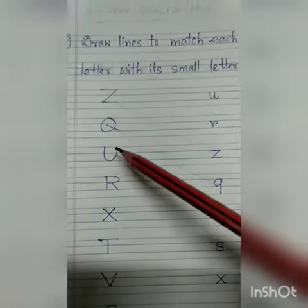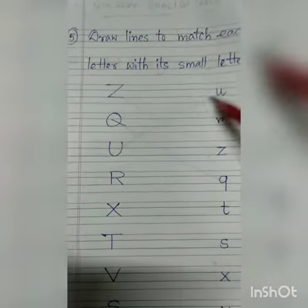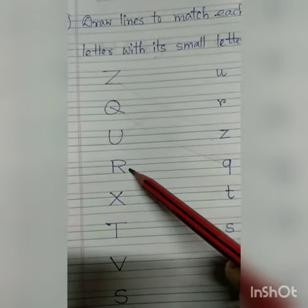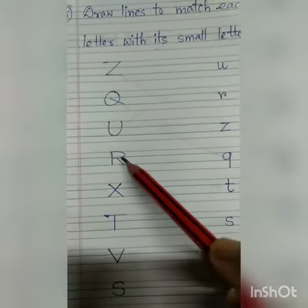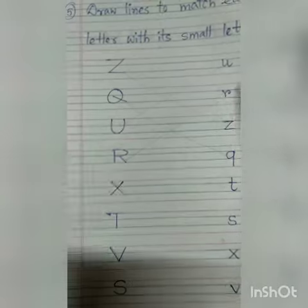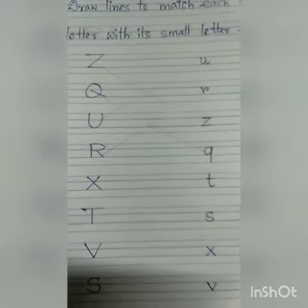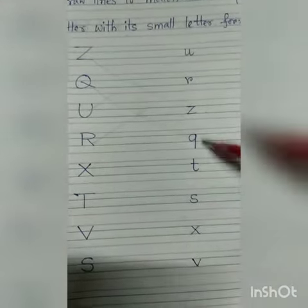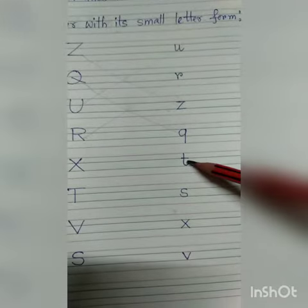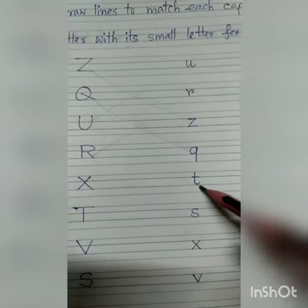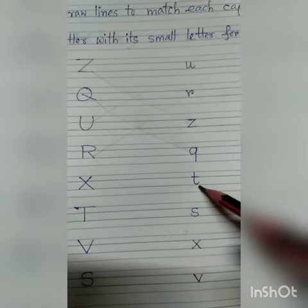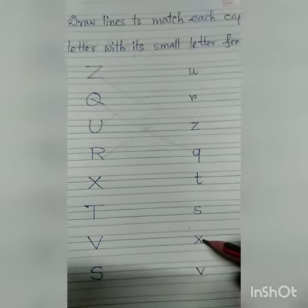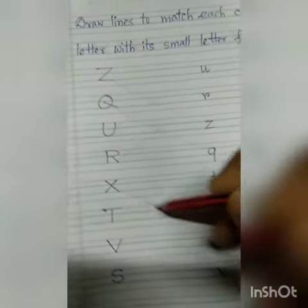This is capital letter R and this is small letter R. You have to match it. Now X — this is capital letter X. This is small letter T, this is small letter S, and this is small letter X. So you have to match it like this.